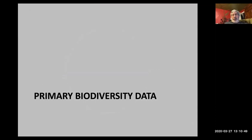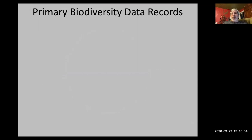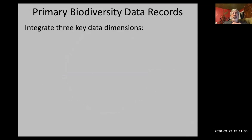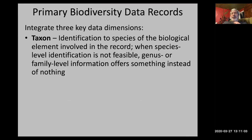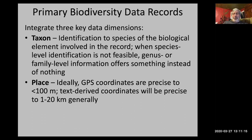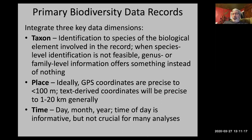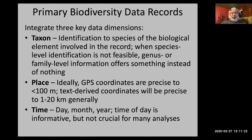Let's talk briefly about primary biodiversity data. What are primary biodiversity data records? They're records that integrate three data dimensions: first, a taxon — some species; second, some place; and third, some point in time. Those are the three crucial elements. Obviously there are other dimensions, but these three are the basis for a primary biodiversity data record.